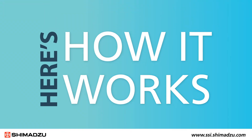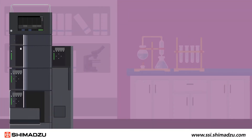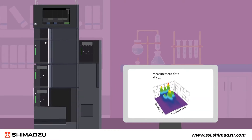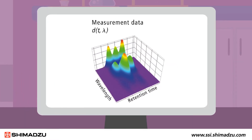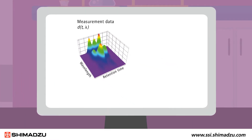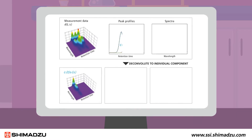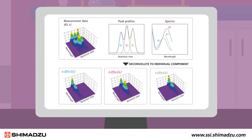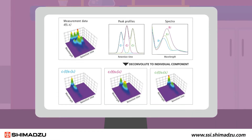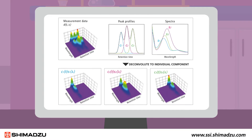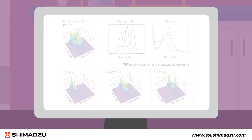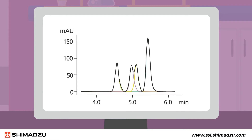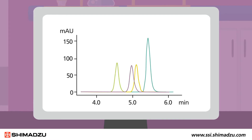Here's how it works. IPDA uses spectral differences to isolate co-eluting peaks and detect impurities and target peaks. This unique software enables users to visualize and detect a minor single impurity even when the impurity is co-eluted with an analyte. It also facilitates the separation of hard-to-separate peaks on the column.